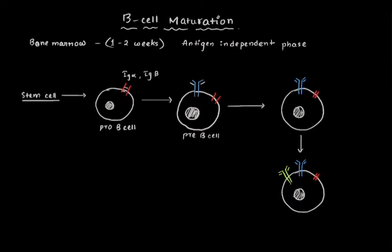During this conversion, there is V-D-J recombination. V-D-J recombination rearranges the heavy chain of the IgM and produces it onto the surface of the pre-B-cell. This is the heavy chain of Mu or IgM.